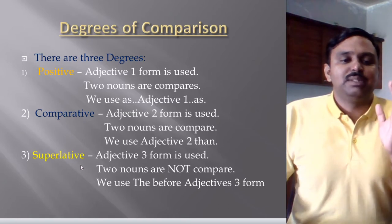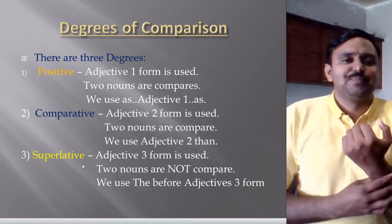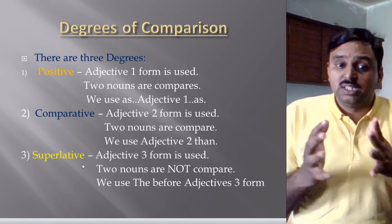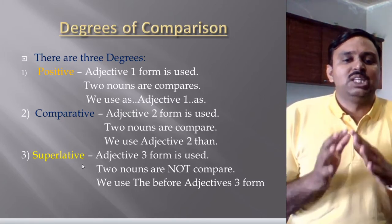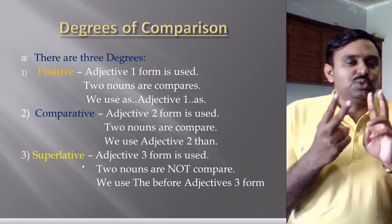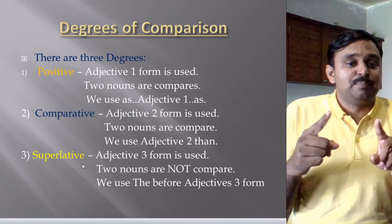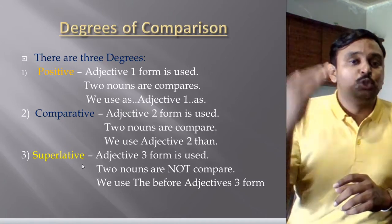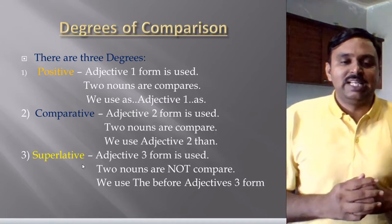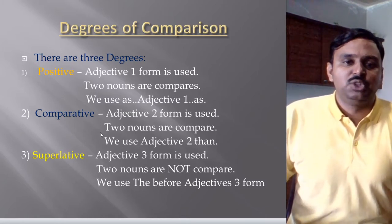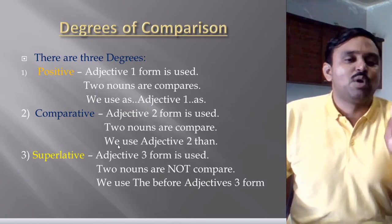For the superlative degree, the adjective third form is used, and two nouns are not compared. Remember, this is very important. Here, one noun is compared to all nouns present, showing superior quality. Then we use 'the' before the adjective third form. These are the basic rules — note them down, they are very important.